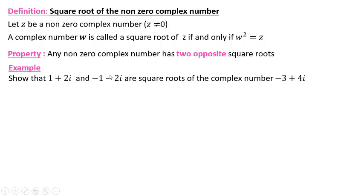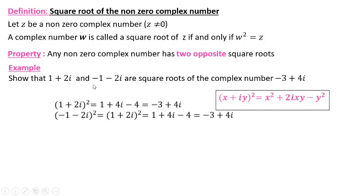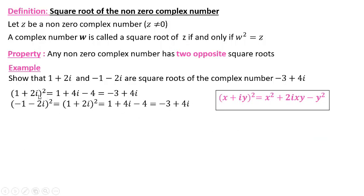Direct example: show that these two complex numbers are square roots of minus three plus four i. By definition, it is enough to show that the squares of these two complex numbers equal minus three plus four i. One plus two i, all squared, is of the form (a+b)² = a² + 2ab + b². This gives 1 + 4i + 4i², and since i² = −1, four i² equals minus four.